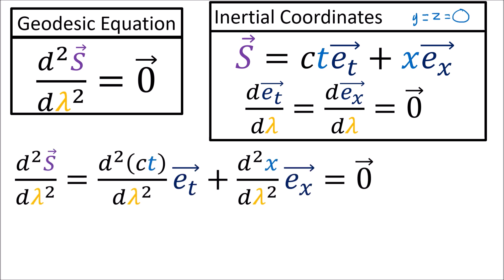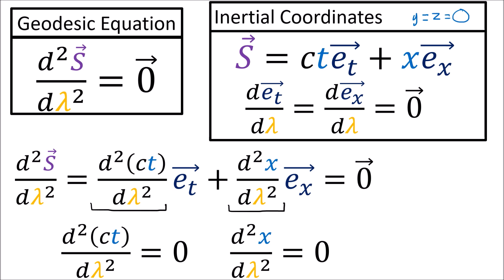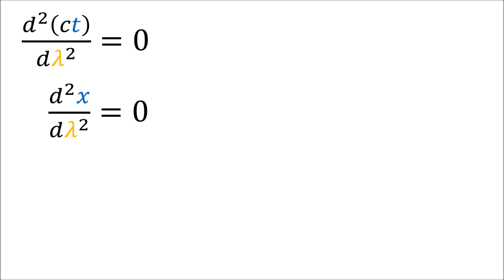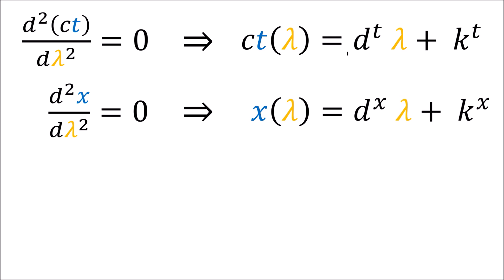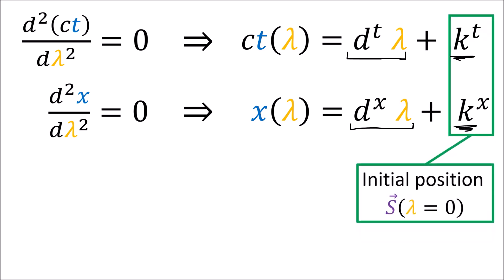We also know that basis vectors are constant everywhere in inertial coordinate systems, so the derivatives of the basis vectors are always 0. So to get the second derivative of s, we just take the second derivative of its components ct and x, because the derivatives of the basis vectors are 0 and we can treat them as constant. In this case, the geodesic equation becomes two component equations: the second derivative of ct equals 0, and the second derivative of x equals 0. The solutions to these differential equations are both linear equations in the lambda variable.